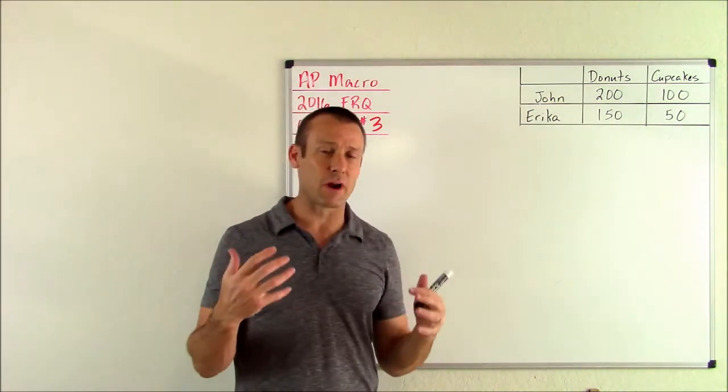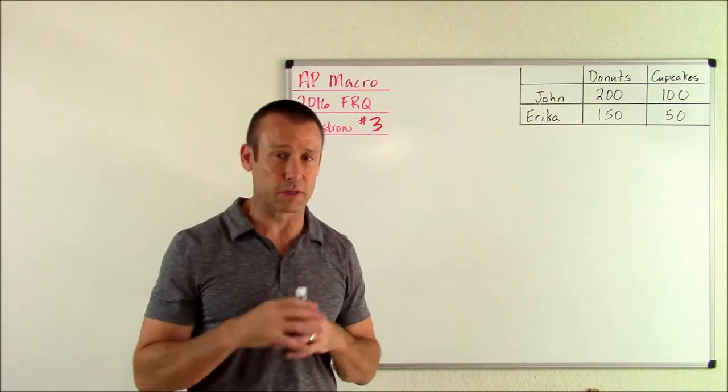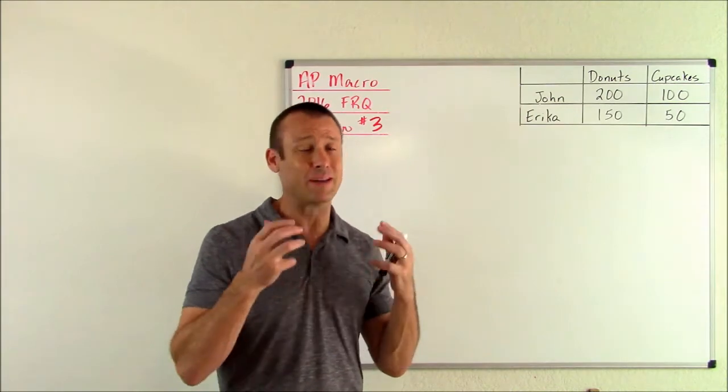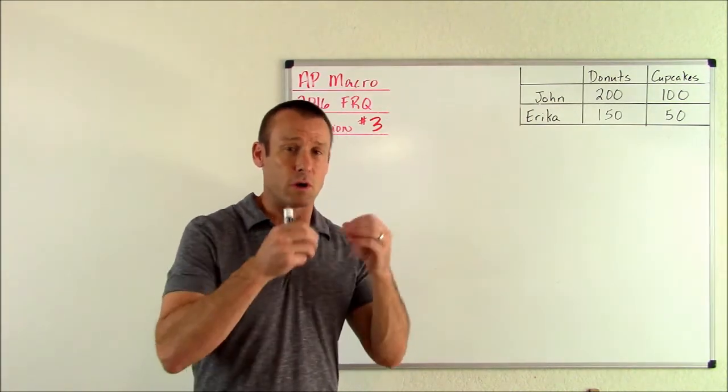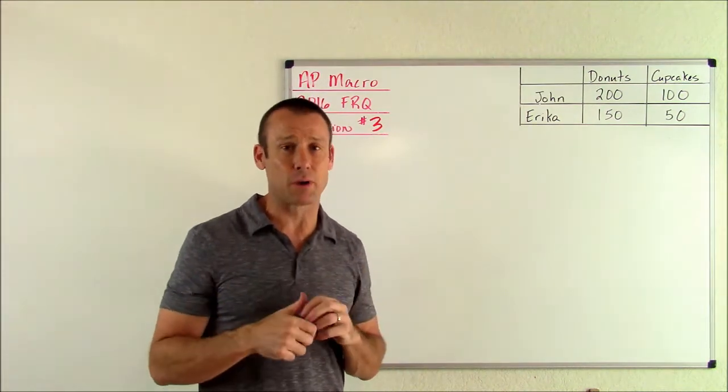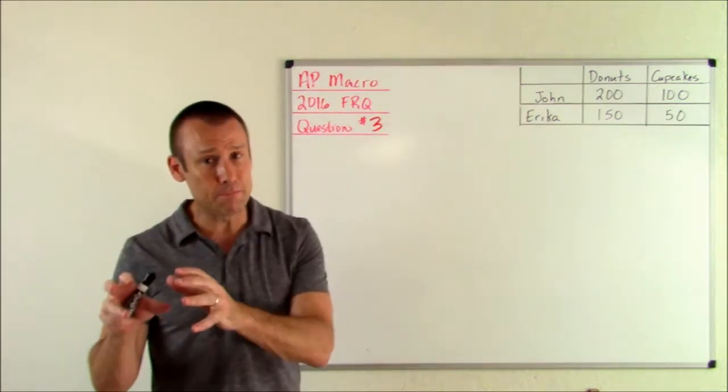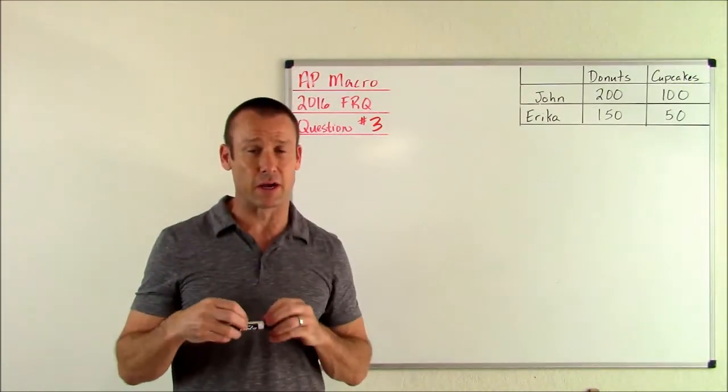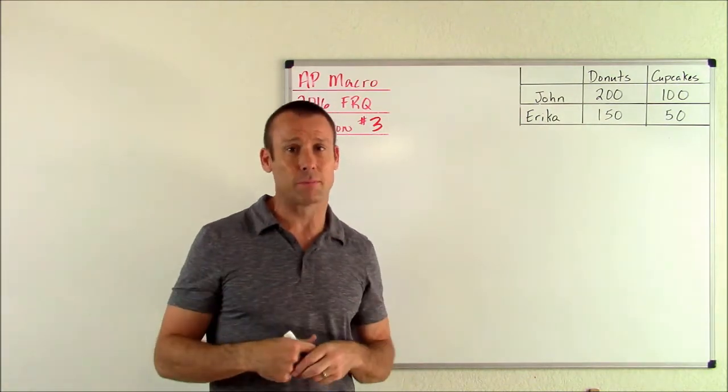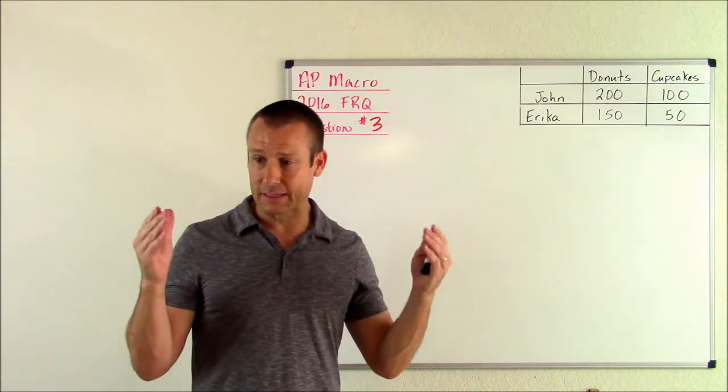Here's one thing I want students to know right from the beginning. There's two types of comparative advantage problems, and that's what this is going to be. One type of problem is an input problem where the outputs are constant and the inputs are varying. The other one is an output problem where the inputs are constant and the outputs are varying. This is an output problem, which is the more typical problem and I think a little bit easier to solve.